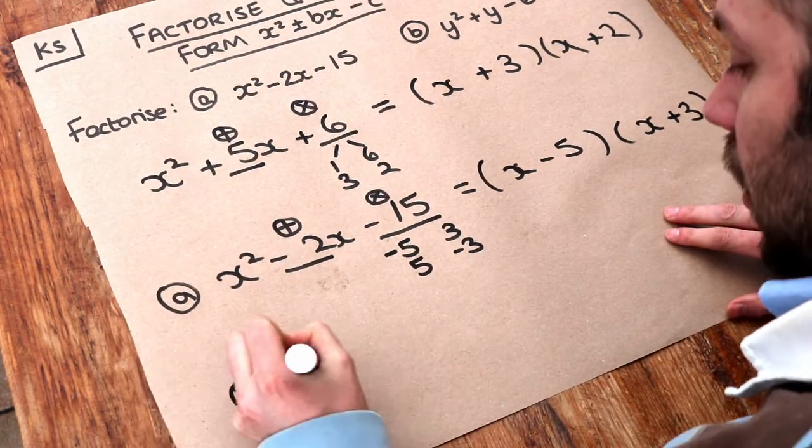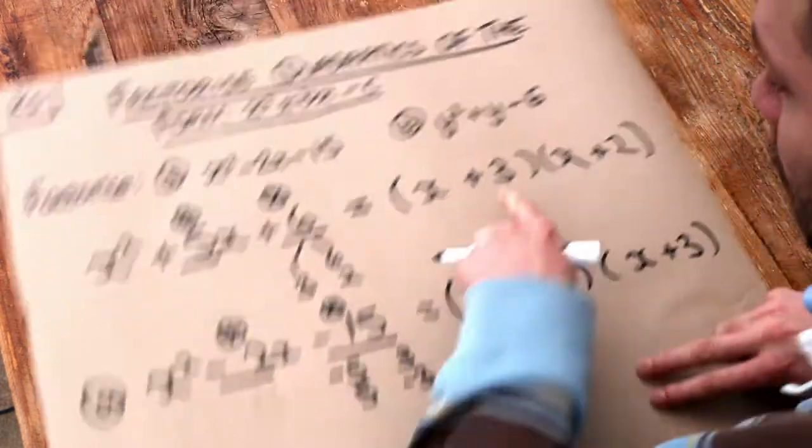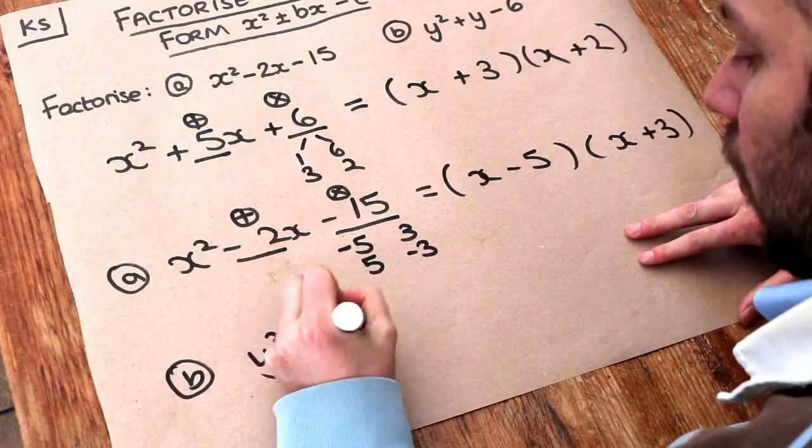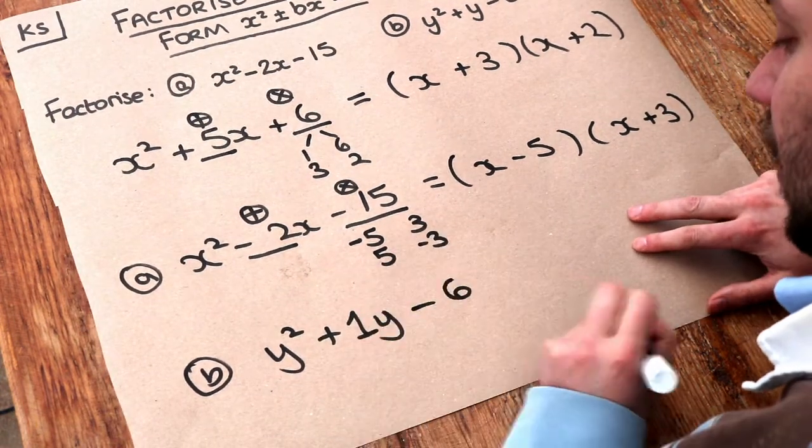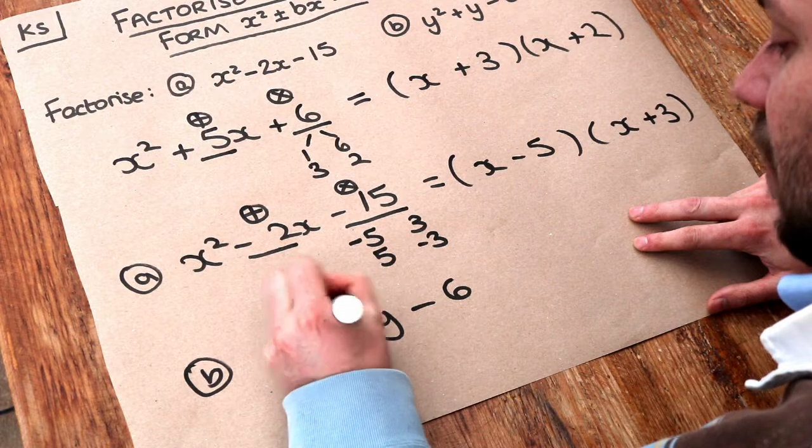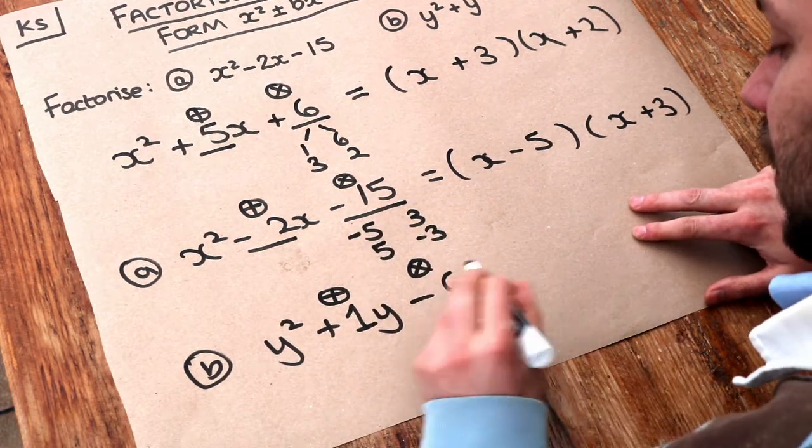What about the second one? We've got y squared plus 4. There's no number in front of that y so we're just going to put 1 because 1y is the same as y. And then we've got minus 6. So we need two numbers that add to give positive 1 and multiply to give negative 6.